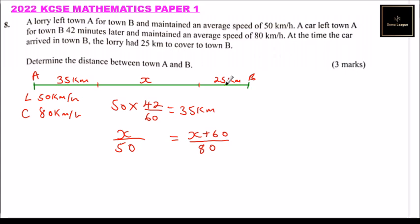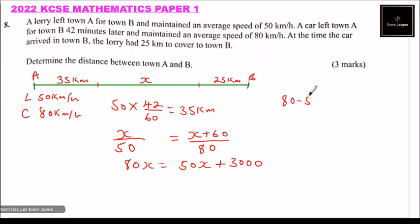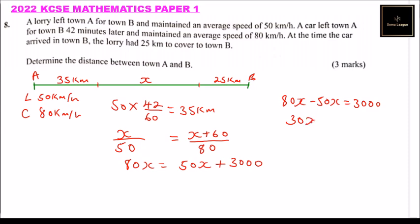So by finding x, we'll be able to find the distance. We say 80x equals 50x plus 3000. Now we bring 50x to this side: 80x minus 50x equals 3000. That gives us 30x equals 3000.